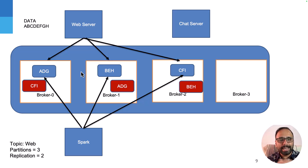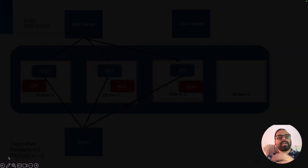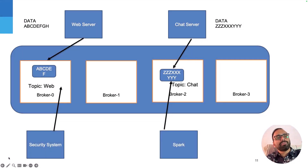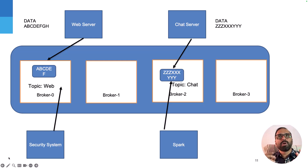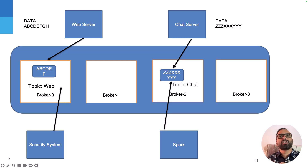Whatever data the producer sends lands on one broker. So what if that broker becomes full? For example, the web server is sending data to broker zero — you have a, b, c, d, e, f — but what if hundreds of web servers fill it up? Another problem: even if broker zero can store the data, if too many consumers try to read from it, broker zero becomes a bottleneck. Kafka has a distributed design, so we can leverage distributed computing to solve these problems.